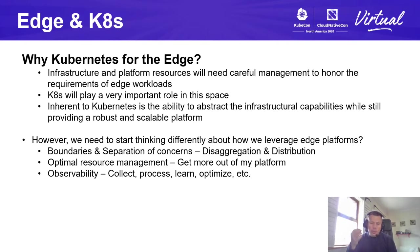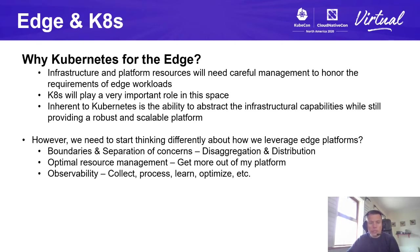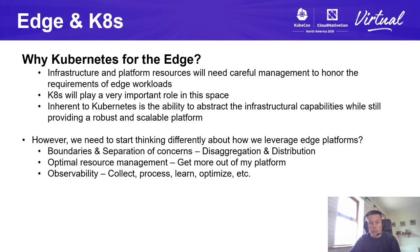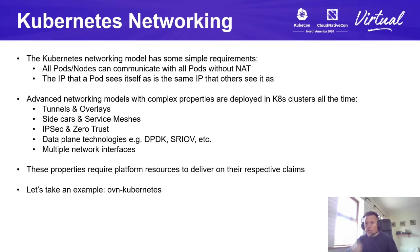To get the best out of an edge deployment, we need to think differently — be aware of boundaries and separate out concerns. We can look at disaggregation and distribution, manage resources on our platforms effectively, and ensure instrumentation is built in from the ground up so we have observability capabilities that allow us to collect, process, learn, and optimize. Kubernetes is going to be a big player in the edge arena, and one area I want to focus on is the Kubernetes networking model.